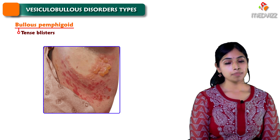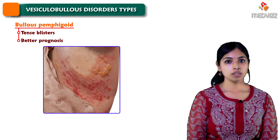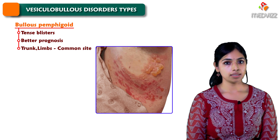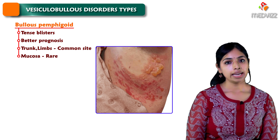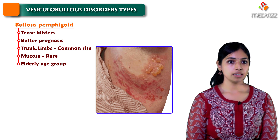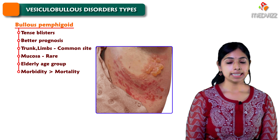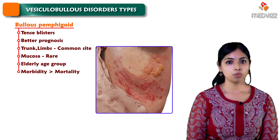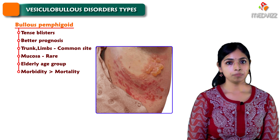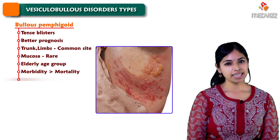Bullous pemphigoid has a better prognosis compared to pemphigus vulgaris and can involve the whole body. The trunk and limbs are common sites, but involvement of mucosa is rare. Bullous pemphigoid is seen more commonly in an elderly age group, compared to pemphigus vulgaris which is seen more in a middle age group. The morbidity is high but mortality is quite less, and bullous pemphigoid has a remitting or relapsing course but is self-limiting.